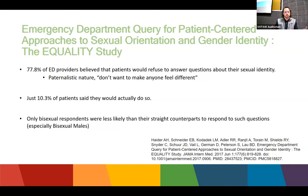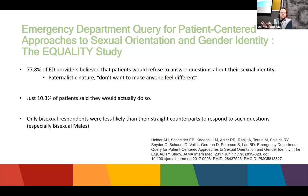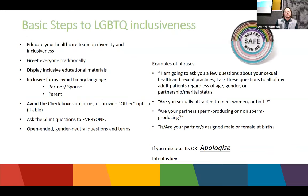One of my favorite studies was an emergency department study on equity — about 75% of ED providers said they didn't want to single someone out by asking their gender identity, assuming patients wouldn't answer. In reality, only about 10% of patients actually refused. Studies with kids showed that adolescents were even more likely to disclose their gender identity and sexual preference — we just had to ask. The group most likely not to respond were bisexual males and bisexual females.